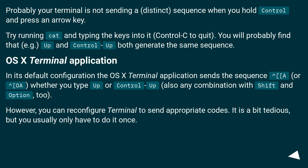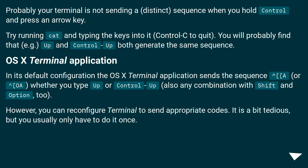Probably your terminal is not sending a distinct sequence when you hold Control and press an arrow key. Try running cat and typing the keys into it, then Control+C to quit. You will probably find that, for example, Up and Control+Up both generate the same sequence.